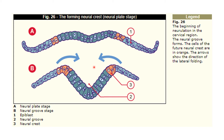Letter A is the neural plate stage — at the plate stage, it is still relatively flat. When the neural groove stage is reached, a groove or bending begins to appear.